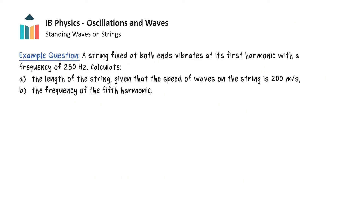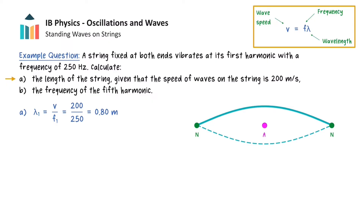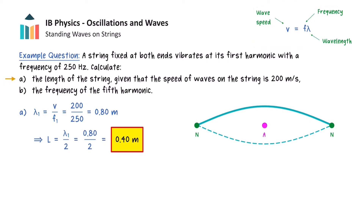Let's apply this understanding to an example question. A string fixed at both ends vibrates at its first harmonic with a frequency of 250 Hz. Part A wants us to calculate the length of the string given that the speed of waves on the string is 200 m per second. We begin by recalling the equation relating the speed, frequency and wavelength of a wave. By rearranging and substituting the relevant values, we get a value of 0.8 m for the wavelength of the first harmonic. A string fixed at both ends will have nodes at the ends, and under these conditions the first harmonic will have one antinode, so half a wavelength fits on the string. The length of the string can therefore be determined by dividing the wavelength by 2, giving us a value of 0.4 m.